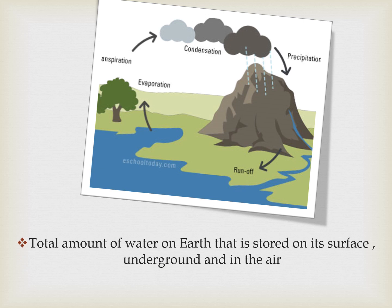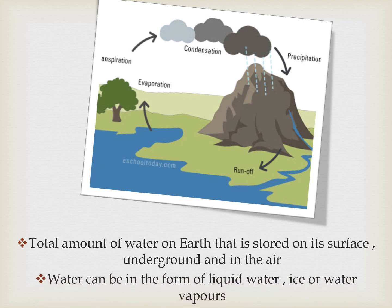The hydrosphere includes the total amount of water on earth — water stored on the surface of the earth, underground, or in the air. Water can be in any form: liquid water, solid form like ice, or gaseous form like water vapor — all come into the hydrosphere.